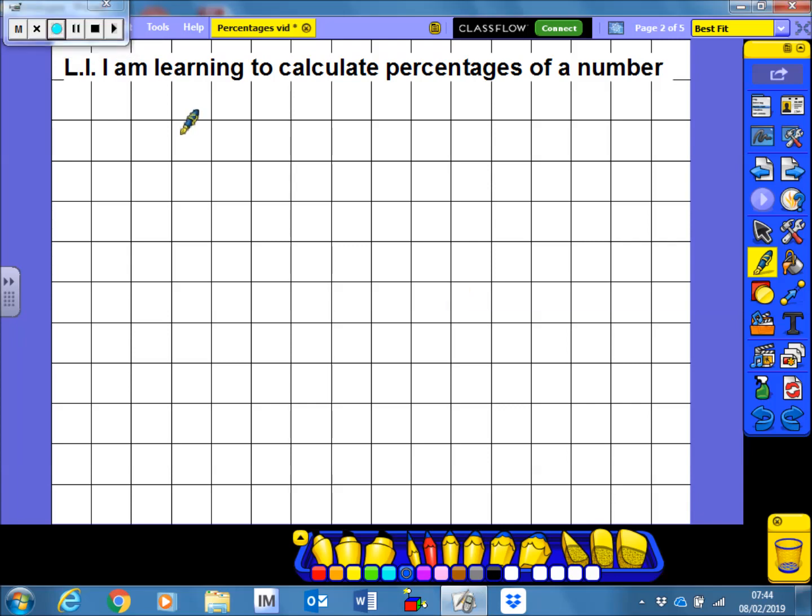So if I take 45%, for instance, what that really is is 45 hundredths, 45 parts of a hundred. If I was to take 37%, then what that really is is 37 hundredths.